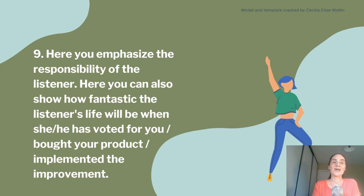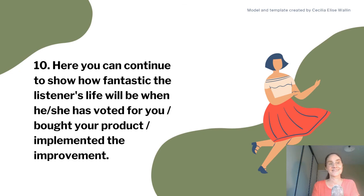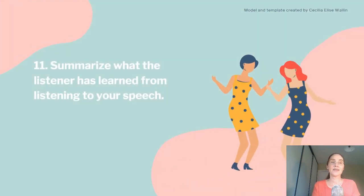Here you can also show how fantastic the listener's life will be when she or he has voted for you, bought your product, or implemented the improvement. Number ten: you can continue to show how fantastic the listener's life will be when he or she has voted for you, bought your product, or implemented the improvement. Number eleven: summarize what the listener has learned from listening to your speech, and emphasize the most important points in your persuasive speech.